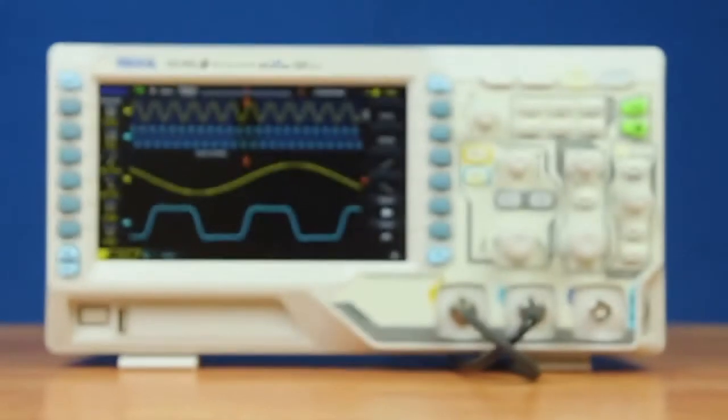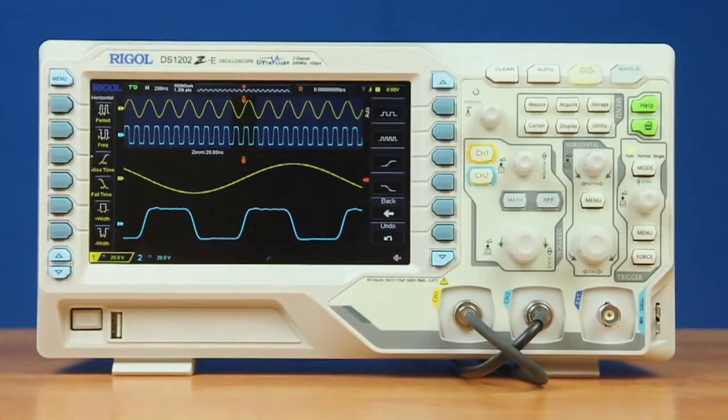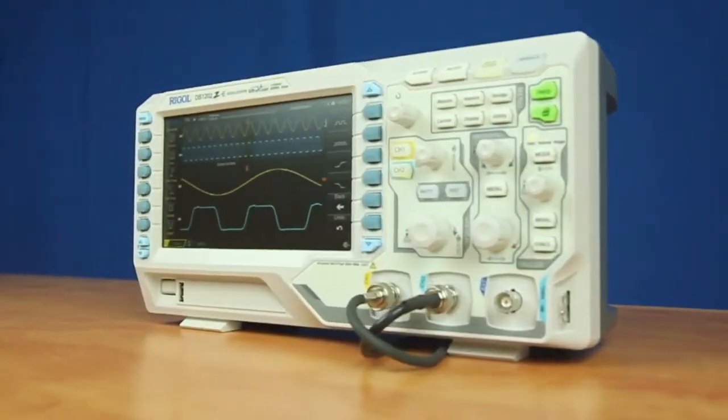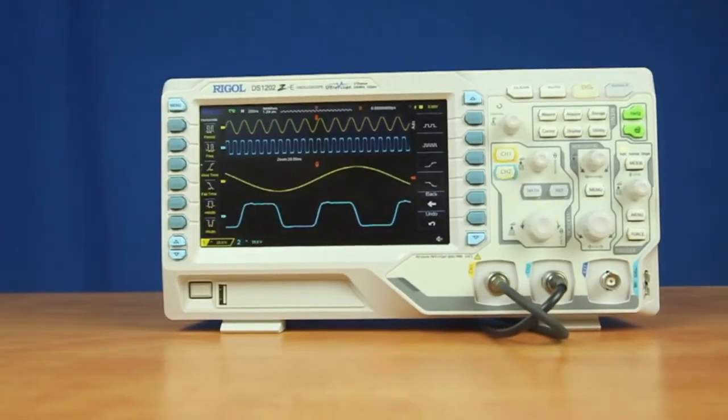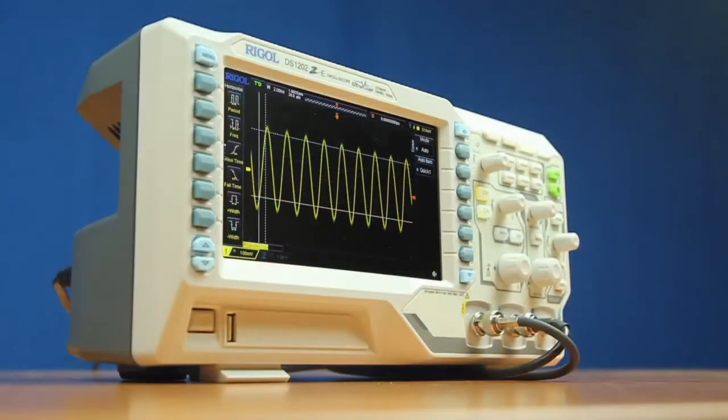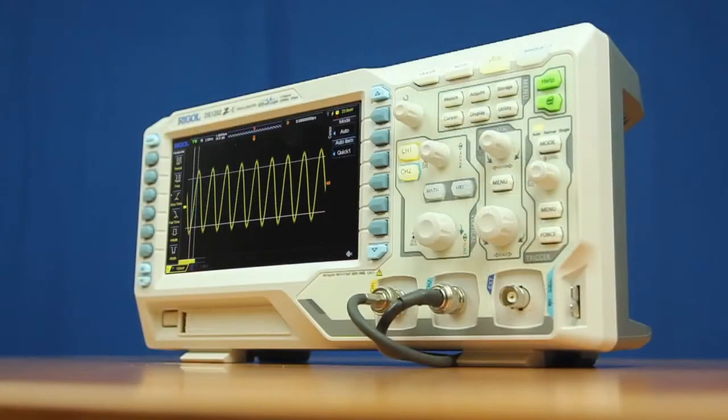Rigol's most popular oscilloscope is now extended to 200 megahertz. The new DS1202Z-E is built on the same platform as the DS1000Z family. This two-channel oscilloscope extends the bandwidth and rise time capabilities to address your electronic testing, design, and debug challenges.